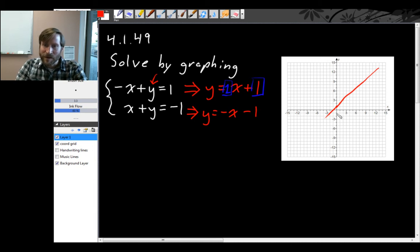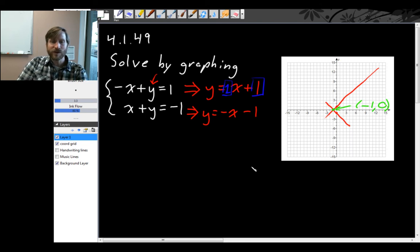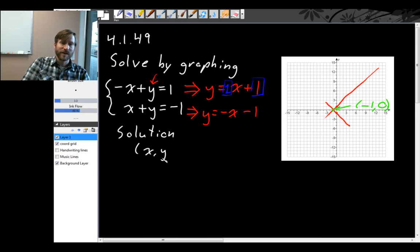Now we can graph that. Minus 1 is right here for our y-intercept, and the slope is minus 1, so that's right 1, down 1, right 1, down 1, like this. And you can see both lines intersect right here at the point minus 1, comma 0. So it looks like the solution for this equation is given by the point minus 1, comma 0.